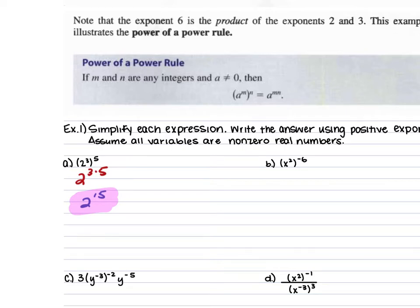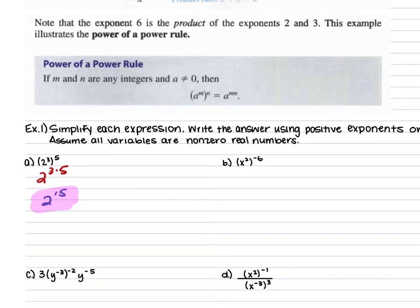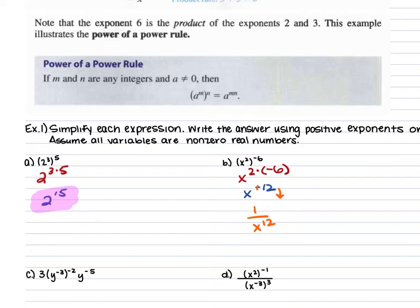For example 1b, we have x squared to the power of negative 6. The x squared is going to be raised to that power of negative 6 by multiplying that negative 6 and that 2 together. So this gives us x to the power of 2 times negative 6, which is negative 12. We have to turn that negative 12 into a positive 12, so we take the reciprocal and bring that x to the 12th to the bottom of our fraction — giving us 1 over x to the 12th power.